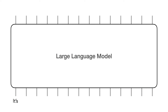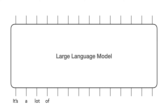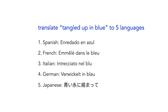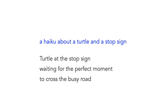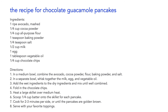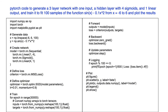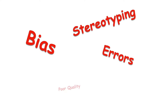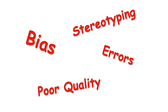Large language models are big neural networks that learn to predict the next word in a sentence. And if you saw our short video on large language models, you'll remember that they can do some pretty amazing things like translate languages, write poems, create recipes, and even generate computer code. But they also suffer from problems like bias, stereotyping, factual errors, and quality issues.